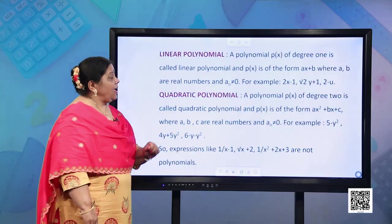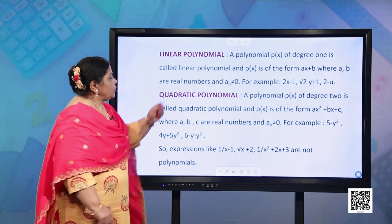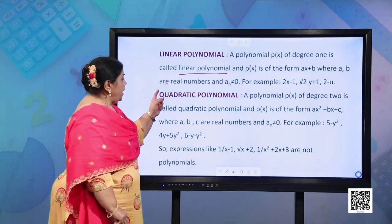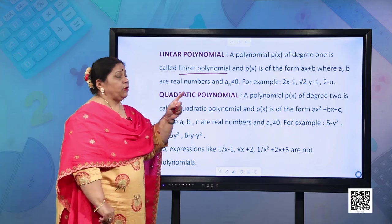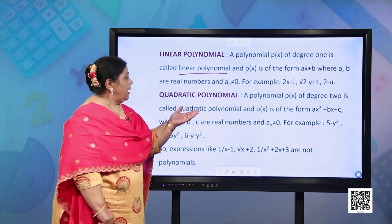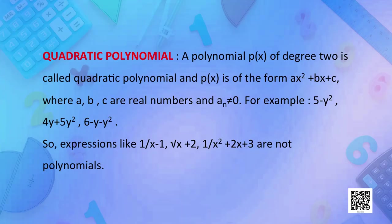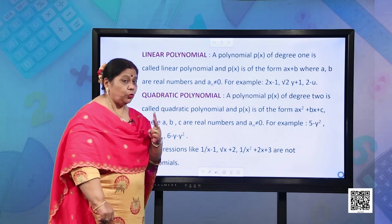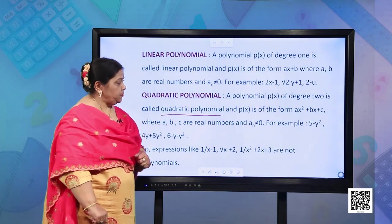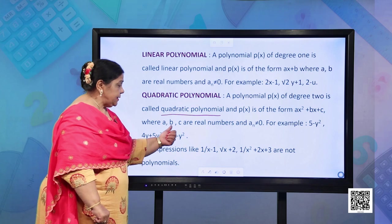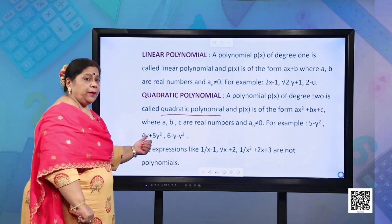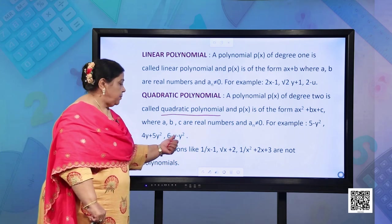We have also studied about linear polynomials. A polynomial p(x) of degree 1 is called a linear polynomial, and p(x) is of the form ax + b where a and b are real numbers and a is not equal to 0. For example, 2x − 1, √2·y + 1, 2 − u, etc. What is a quadratic polynomial? A polynomial p(x) of degree 2 is called a quadratic polynomial, and p(x) is of the form ax² + bx + c where a, b, c are real numbers and a is not equal to 0.